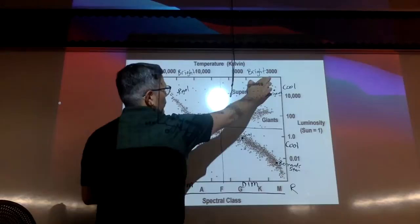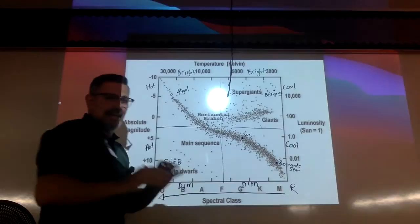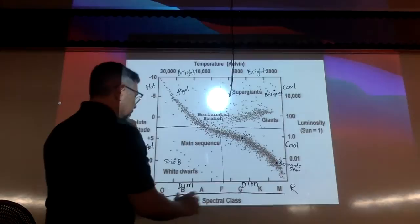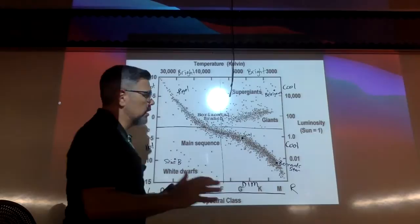3,000 degrees, 5,000, 10,000, 30,000. And it even gets hotter than that, up to 50,000 degrees Kelvin, which is super hot. So make sure we understand that. Bottom to top gets brighter. From right to left, it gets hotter.